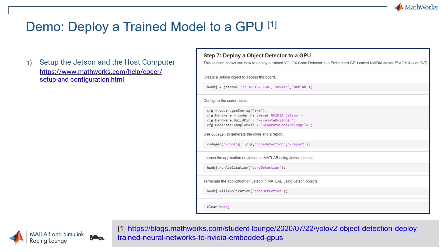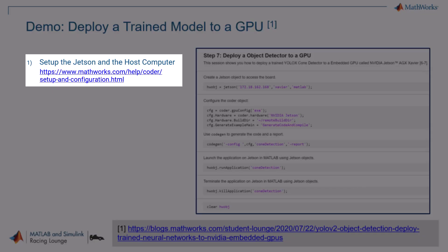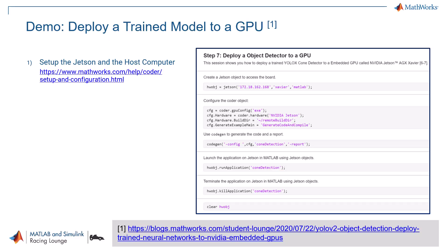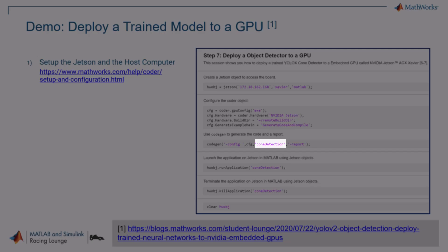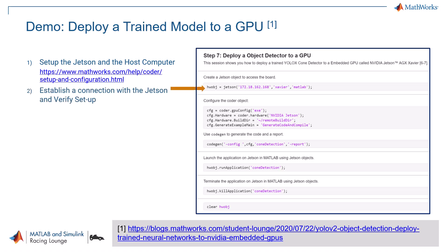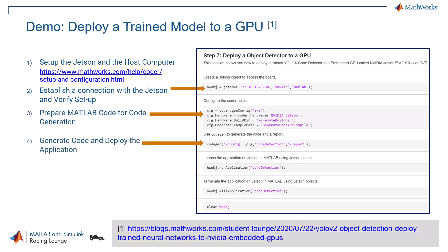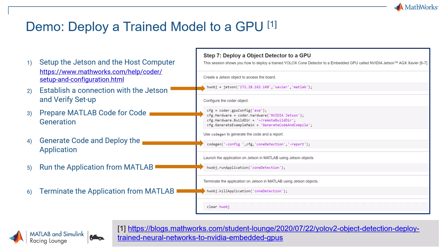Here, the first step is setting up the GPU and the host computer. For more details on how to set up the hardware, please refer to this webpage. The main application that we want to deploy is called cone detection. To run the application on the GPU, you first need to create a Jetson object using the GPU's IP address, username, and password. After configuring the coder properly, you can use the codegen function to automatically generate and compile the application for the GPU. You can start the application using the runApplication function, or stop it using the killApplication function directly from MATLAB. When you are done, don't forget to clear the hardware object.